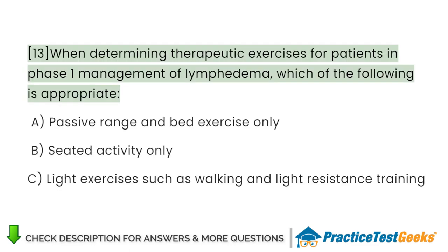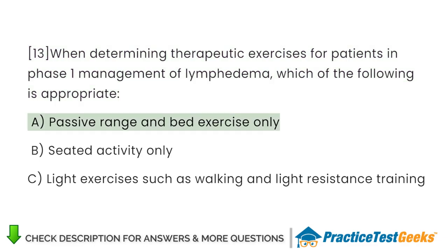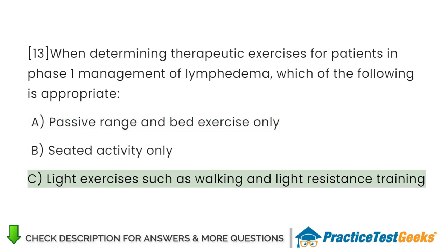When determining therapeutic exercises for patients in Phase 1 management of lymphedema, which of the following is appropriate? A. Passive range and bed exercise only. B. Seated activity only. C. Light exercises such as walking and light resistance training.